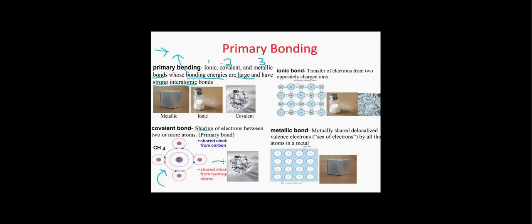Here we have a picture of a diamond, and diamond is also covalently bonded. In methane, we have 0-D covalent bonding, and in diamond, we have 3-D covalent bonding. If you want to know more about the dimensions and what happens with covalent bonding, check out the Muddiest Point bonding video up here, which has a more in-depth version of covalent bonding.